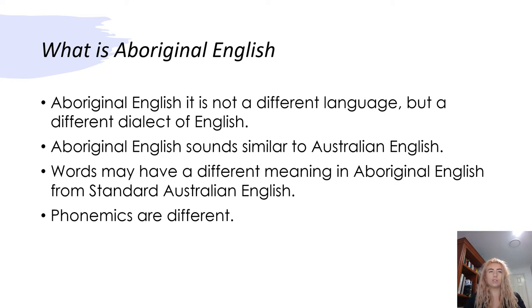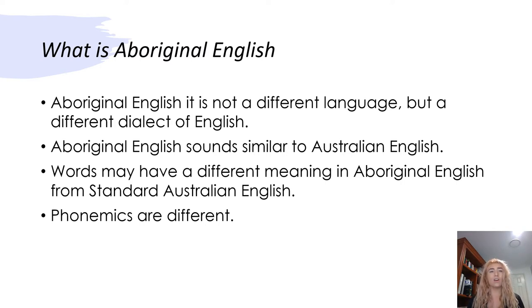When referring to Aboriginal English, it's not necessarily a different language but a different dialect of English, the same way American English is different to Australian English. Aboriginal English sounds similar to Australian English, but there may be miscommunication because of semantic or pragmatic differences. Consequently, words may have a different meaning in Aboriginal English from standard Australian English, and different social contexts may also have an effect. Another obvious difference is the phonemics — for example, consonants that are R's, L's, N's, D's and T's — those are what you call retroflex sounds. These are sounds produced with the tip of the tongue curled back towards the hard palate.